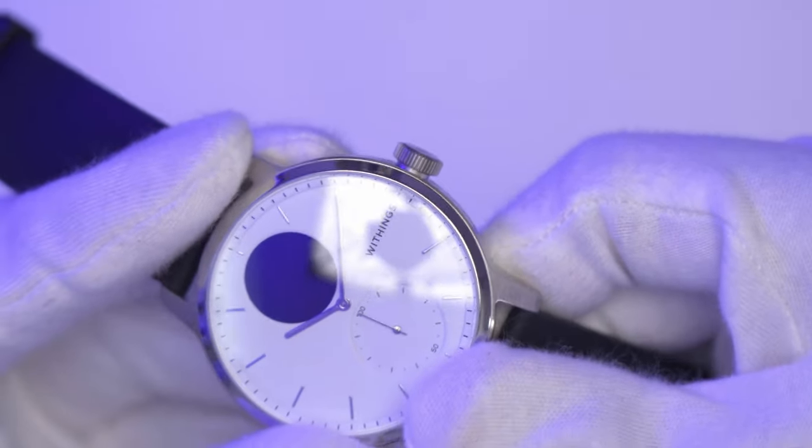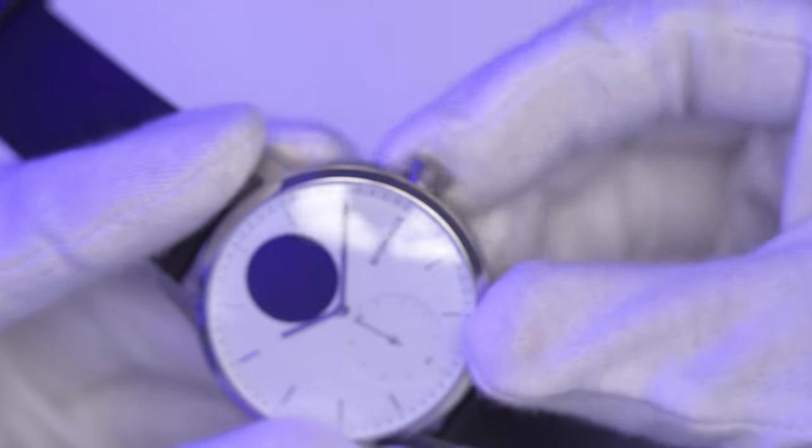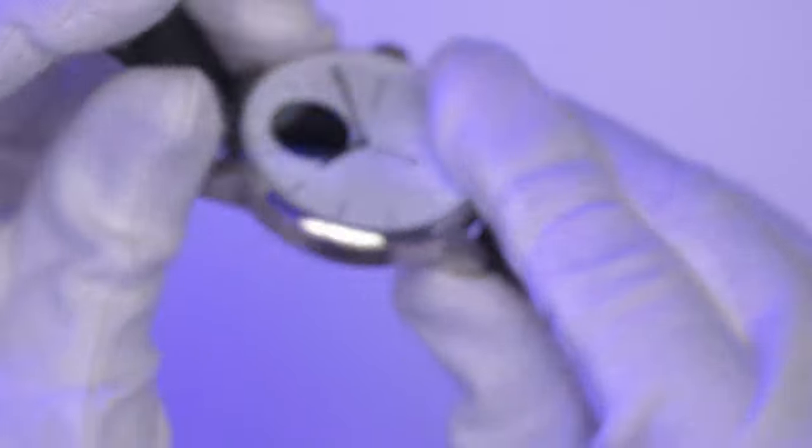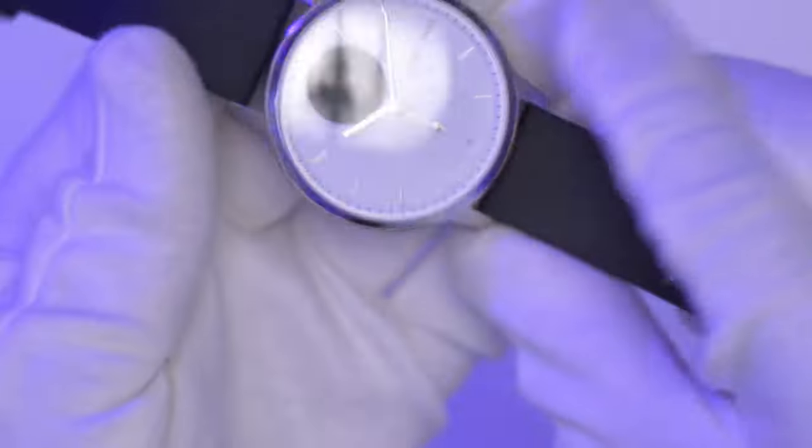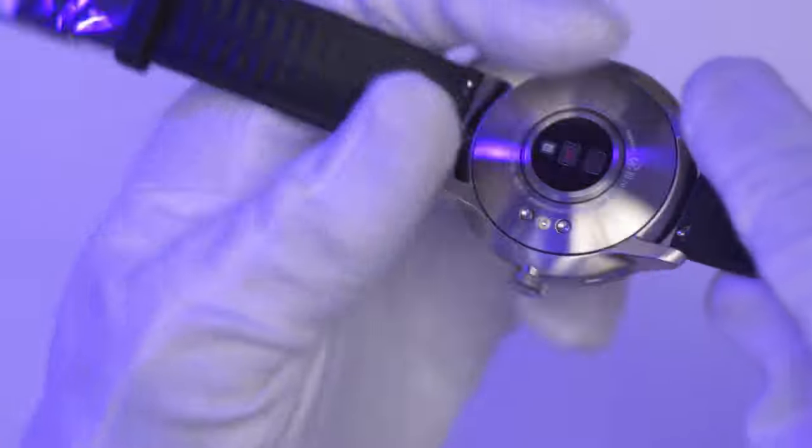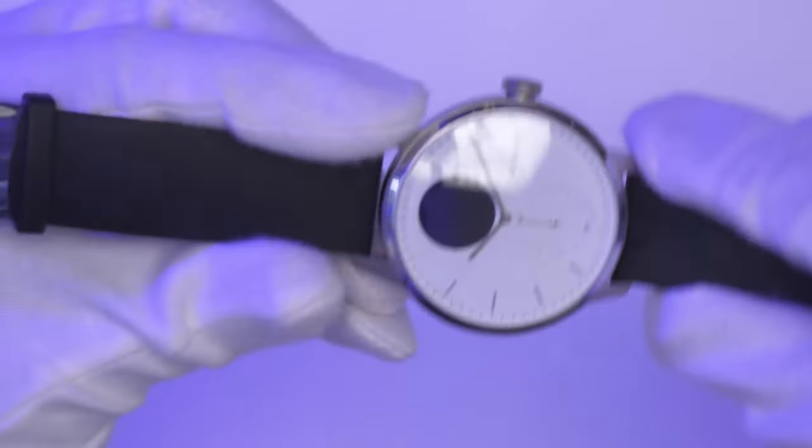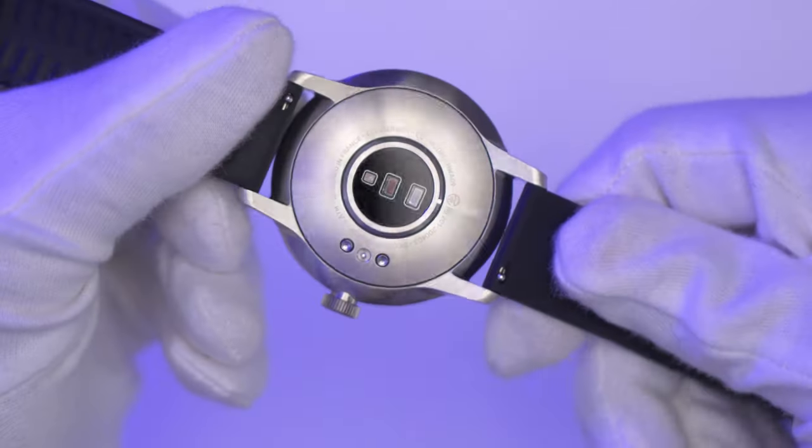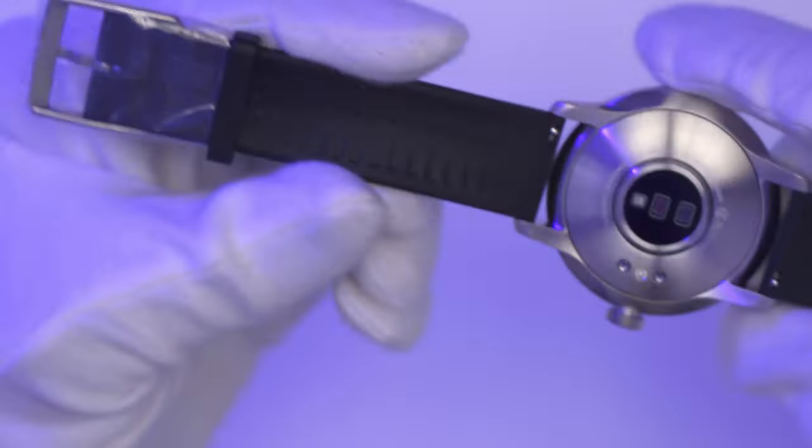You can see on the crown it has this type of ribbed texture for easy gripping—really nice. The watch does have a sizable weight; I didn't check it in terms of grams, but I'll do that in my follow-up video. You can definitely feel you're wearing it, and this is the 42 millimeter version.